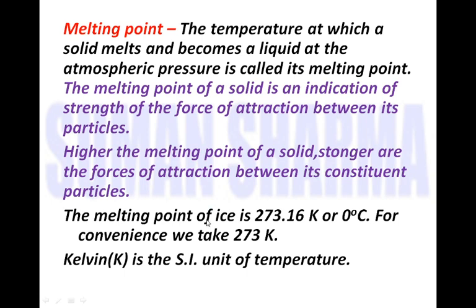The melting point of ice is calculated on two scales: in Celsius scale it is 0 degree Celsius, and in Kelvin scale it is 273.16 Kelvin. For convenience in numericals, we take 273 Kelvin. Kelvin is the SI unit of temperature. In Kelvin we do not put 'degree', but with Celsius we must write 'degree'.